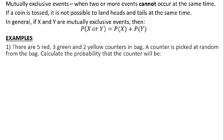Let's look at an example. There are five red, three green, and two yellow counters in a bag. A counter is picked at random from the bag. Calculate the probability that the counter will be red or green. Every time you are looking at probability and you are given 'or', it means that you have to add.